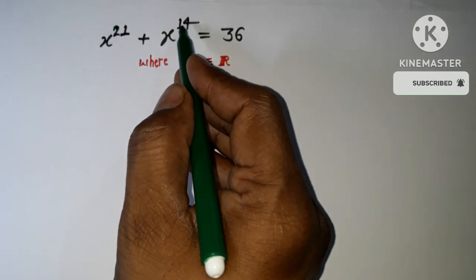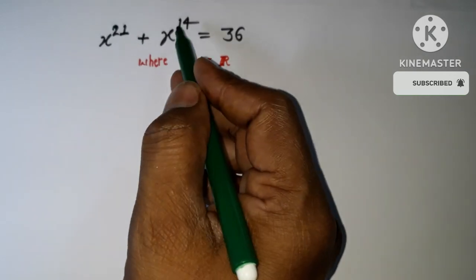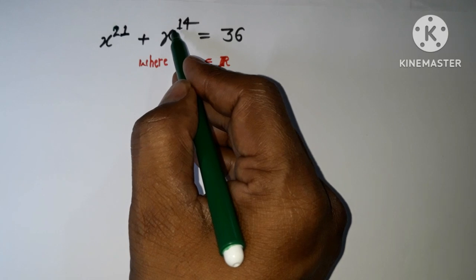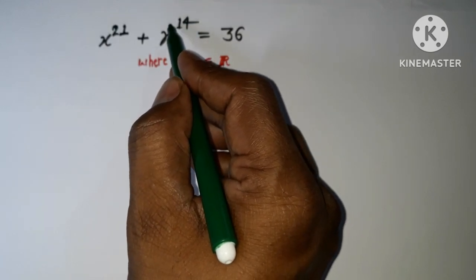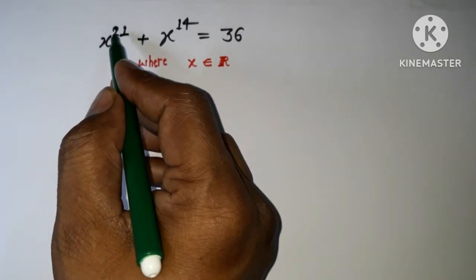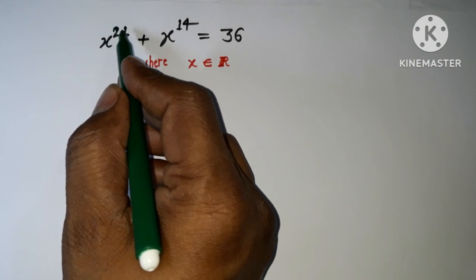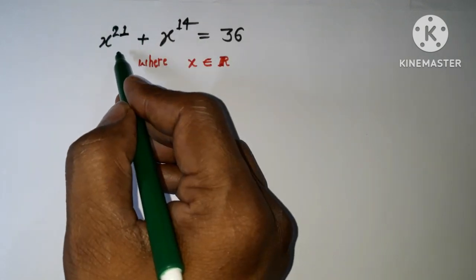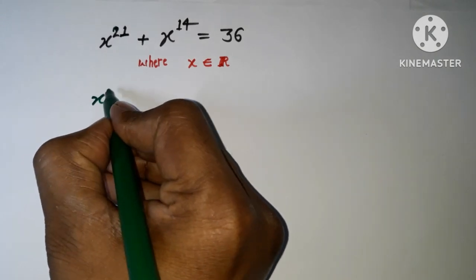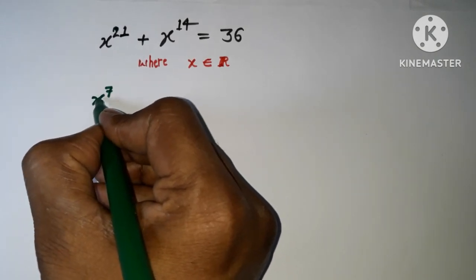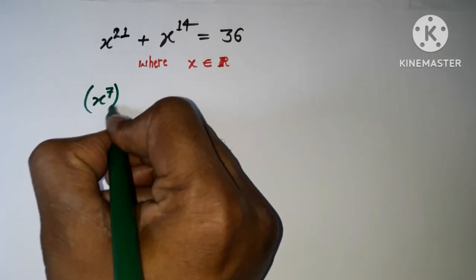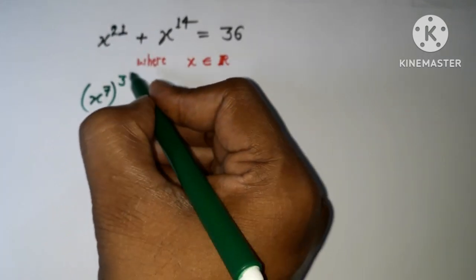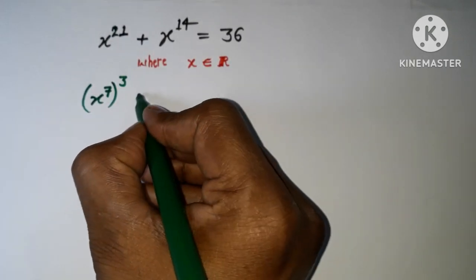You can see that 14 and 21 are related to each other — they are both products of 7. Specifically, 7 times 2 is 14, and 7 times 3 is 21. So I can rewrite this expression: x to the power 7, raised to the power 3, gives x²¹.